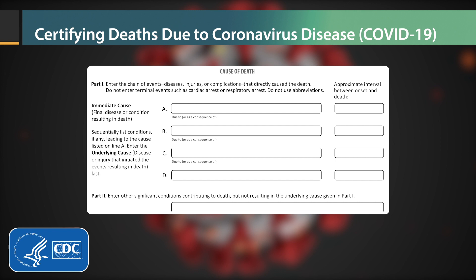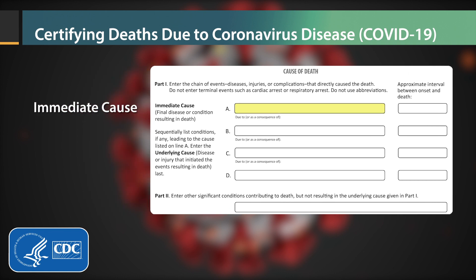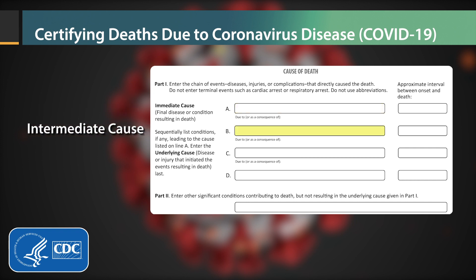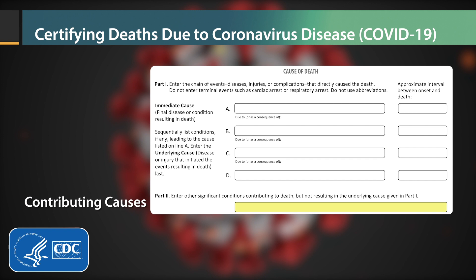Proper cause of death certification requires that you use your best clinical judgment to determine the causes of death to report in the cause of death section of the death certificate. Report the immediate cause on Line A. This condition should be followed by any relevant intermediate causes in a logical sequence in terms of time and etiology below. A specific underlying cause should go on the lowest line used in Part 1. Leave any unused lines blank. Any other conditions that may have contributed but were not part of the sequence in Part 1 should be reported in Part 2.